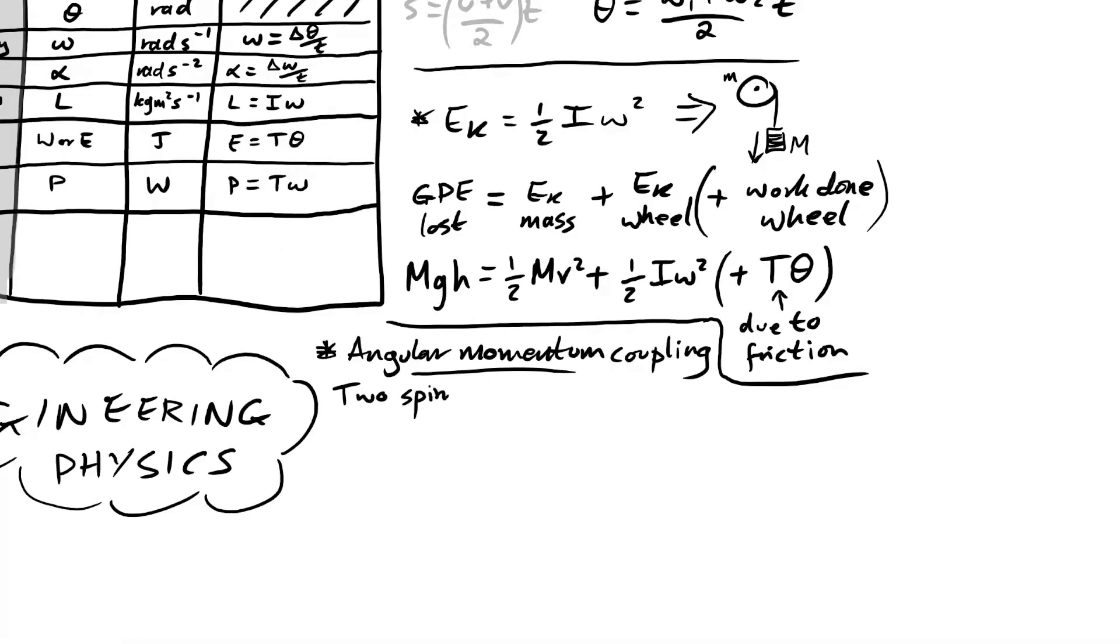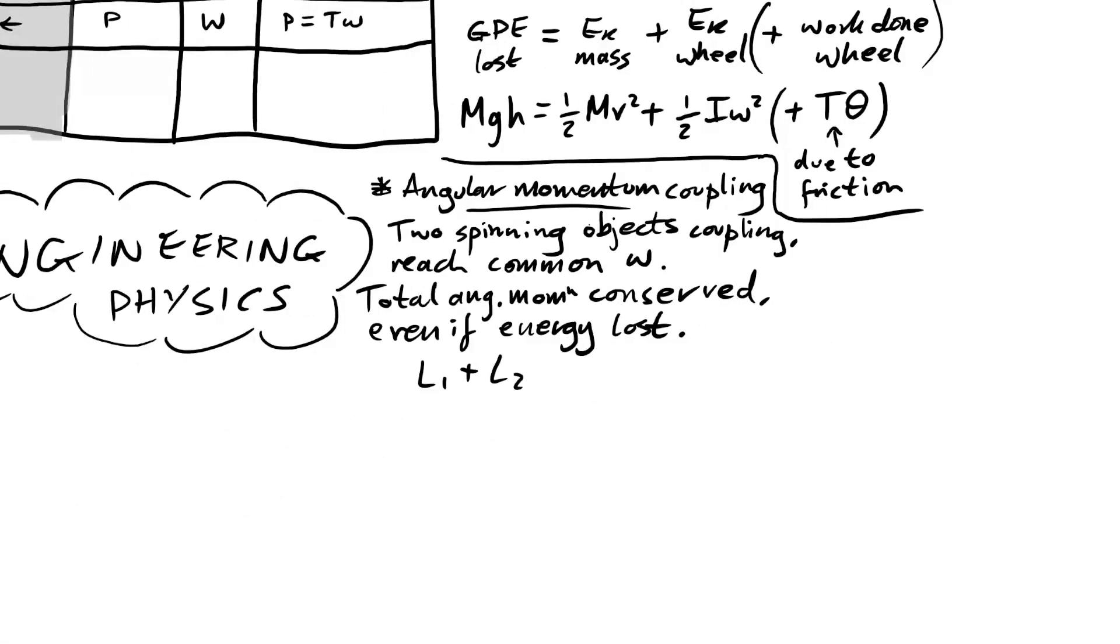Seen this crop up a couple of times when we have angular momentum coupling. If you have two things that are spinning and then they come into contact and they end up going at a common angular speed. Just like a collision in linear mechanics, we know that total angular momentum is going to be conserved even if energy is lost. So we can say angular momentum of one plus the angular momentum of two equals the angular momentum of both of them together afterwards. We're just applying our conservation of momentum rules in linear to rotational mechanics instead.